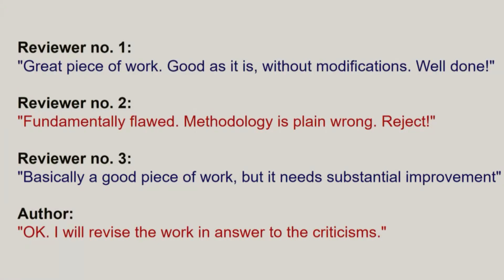For example, the first review may say this is a great piece of work — excellent, you can publish it just as it is. The second reviewer instead might take a much darker view and say it's fundamentally flawed, the methodology is plain wrong, there are errors all over the place, you should reject this paper. If you have two reviews like that, then you clearly need a third one in order to settle the differences. And the third reviewer might say it's basically a good piece of work, but it needs substantial improvement because it's got this flaw and that problem and this inconsistency.